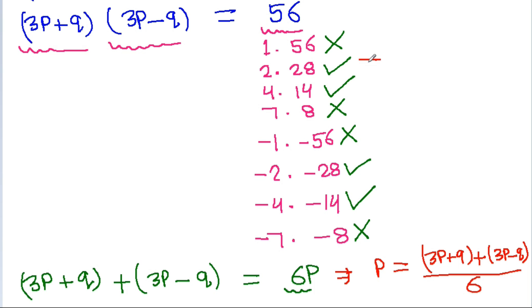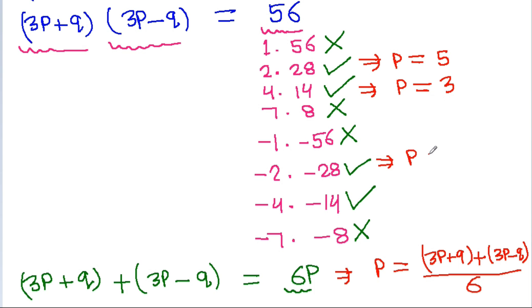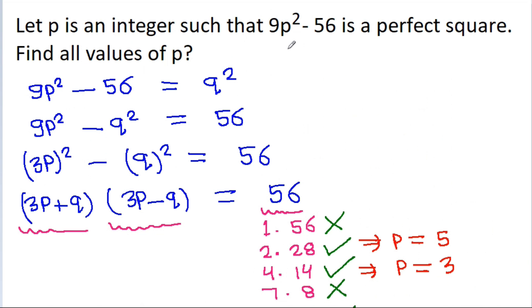We can get p as (3p plus q plus 3p minus q) divided by 6. From the valid factor pairs: 30 divided by 6 gives p equals 5; 18 divided by 6 gives p equals 3; minus 30 divided by 6 gives p equals minus 5; and minus 18 divided by 6 gives p equals minus 3. So p is equal to plus or minus 5 and plus or minus 3.